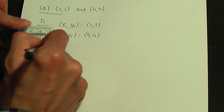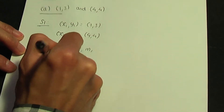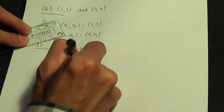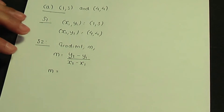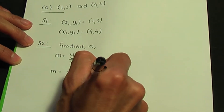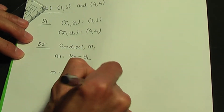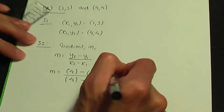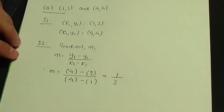Step two: to work out the gradient m, remember the formula — m = (y2 − y1) / (x2 − x1). Substituting the data: y2 is 4 minus y1 which is 3, divided by x2 which is 4 minus x1 which is 1. So 4 − 3 = 1, divided by 4 − 1 = 3. The gradient for part A is 1/3.